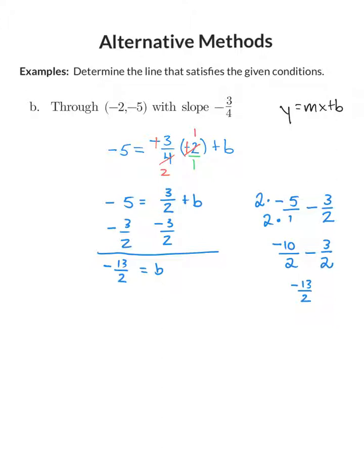We're not done yet — we still need to write our equation in slope-intercept form. The equation is y equals negative three over four x minus thirteen over two. And there is your equation.